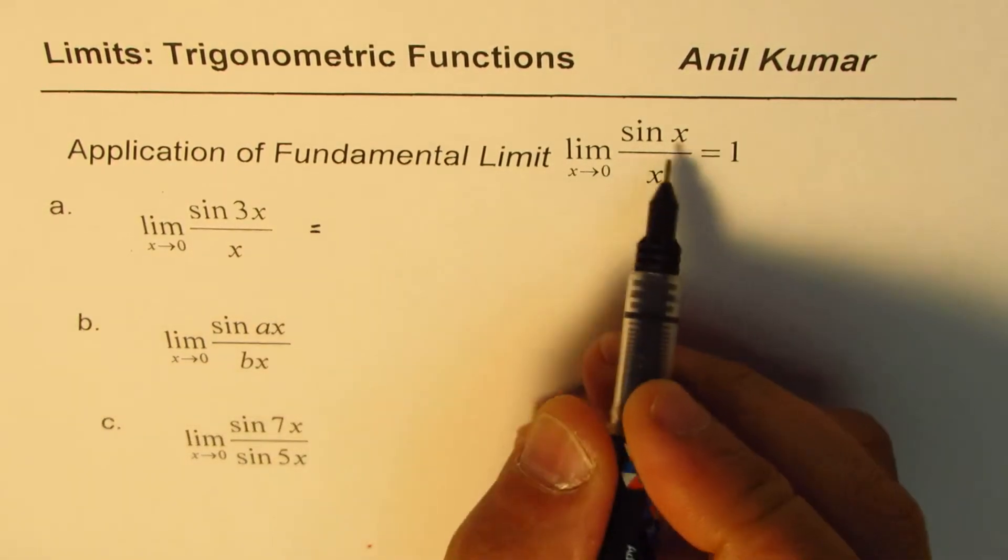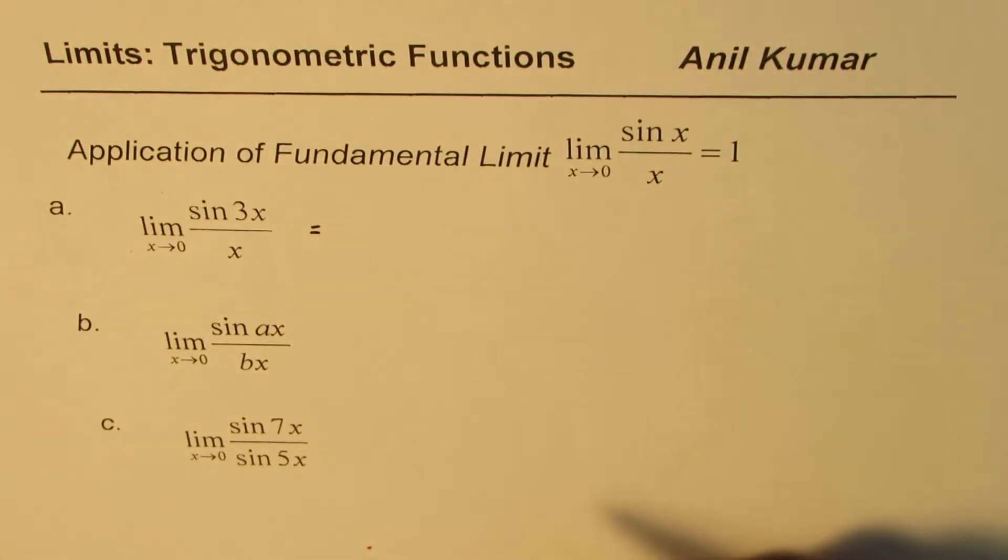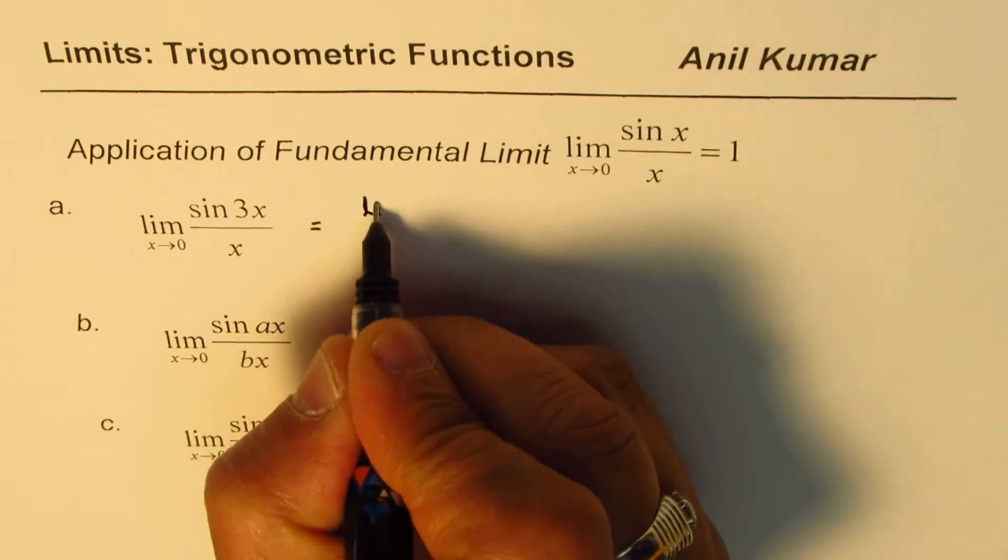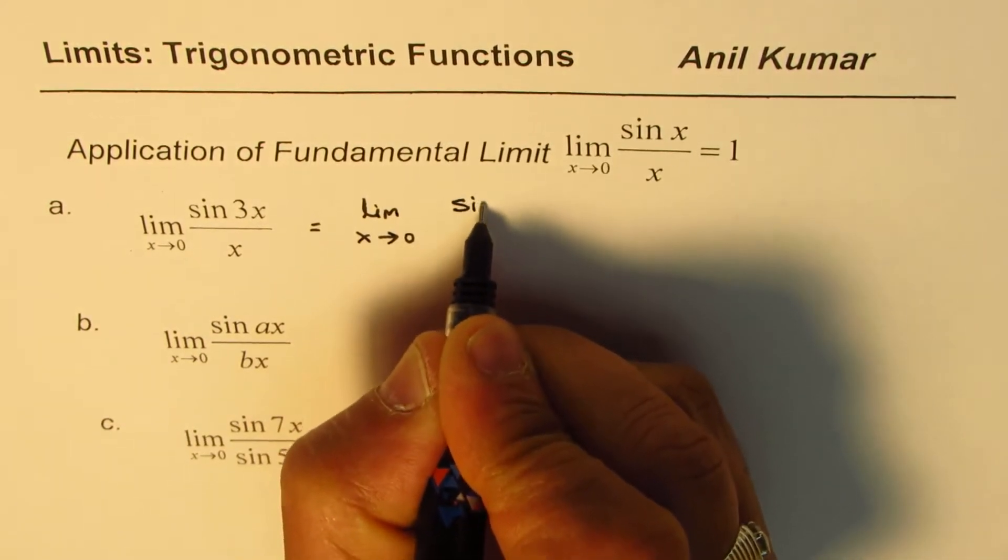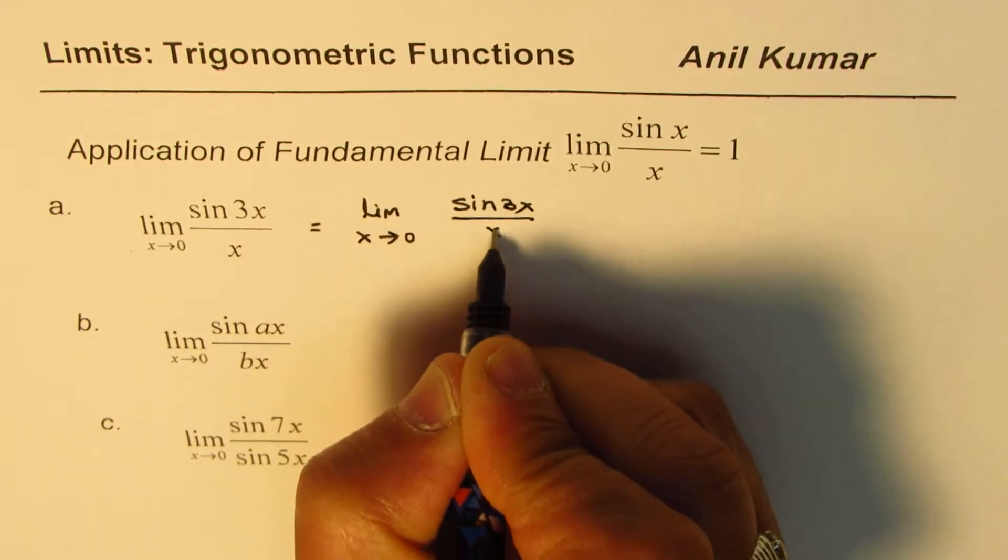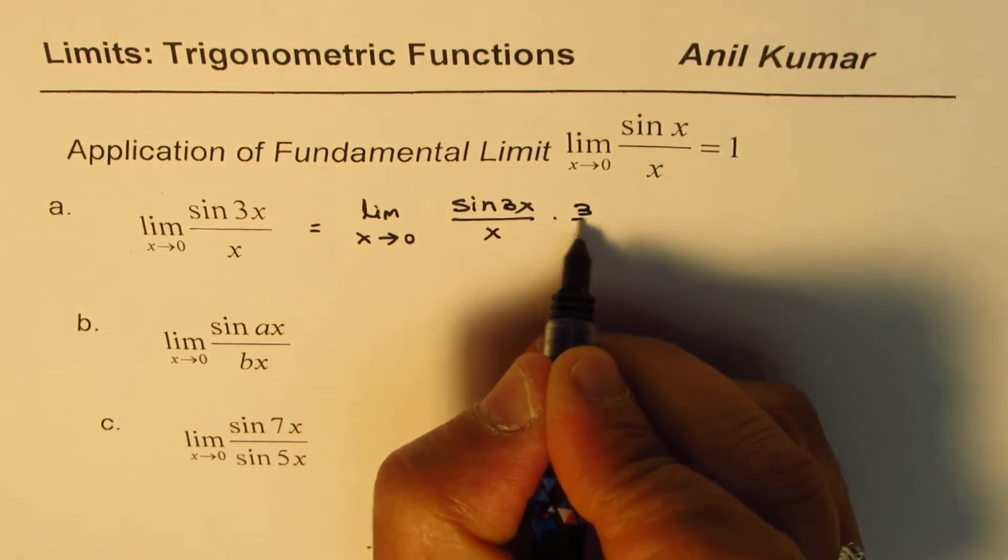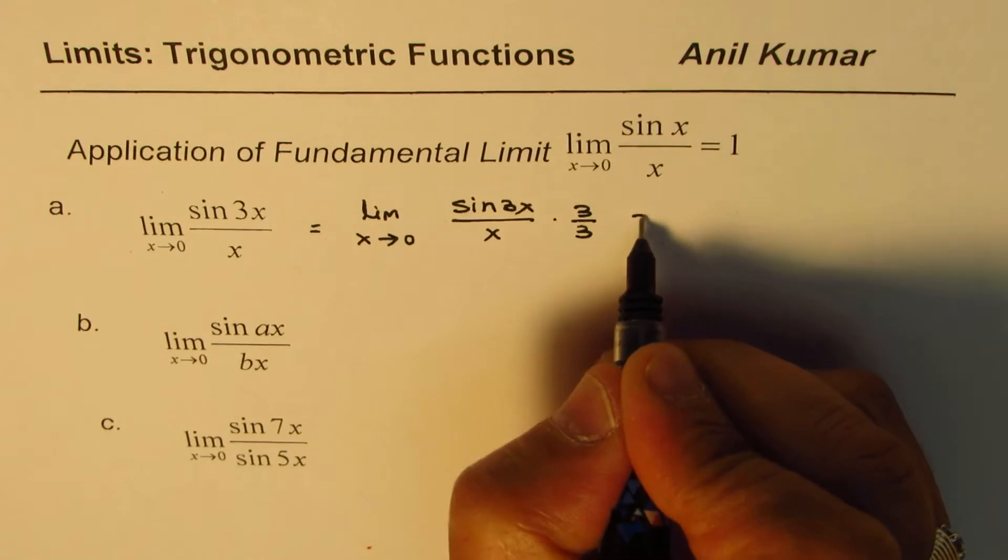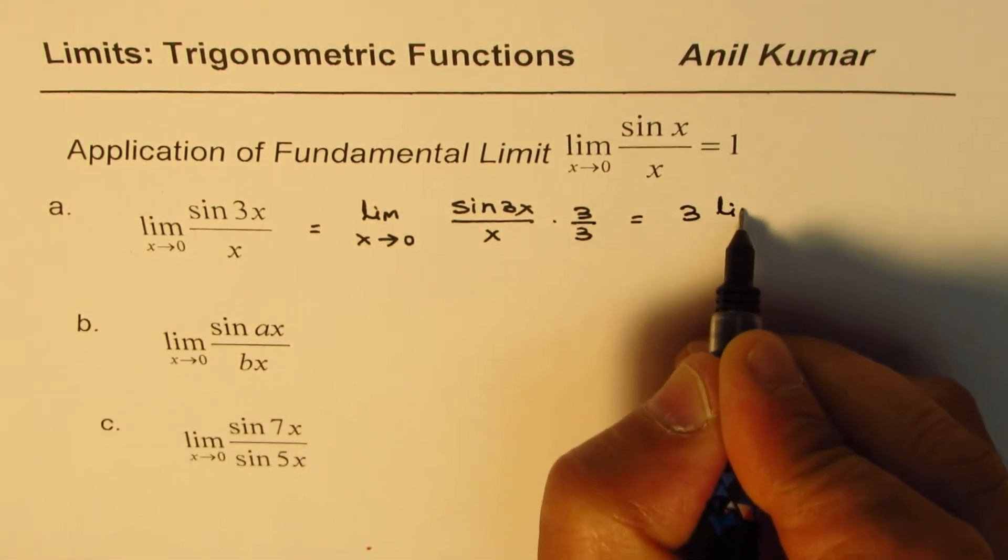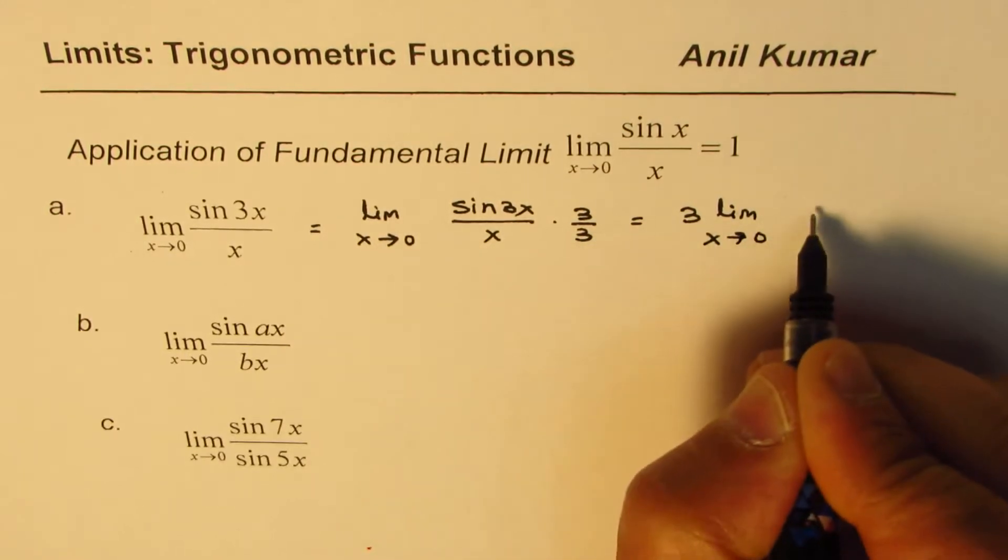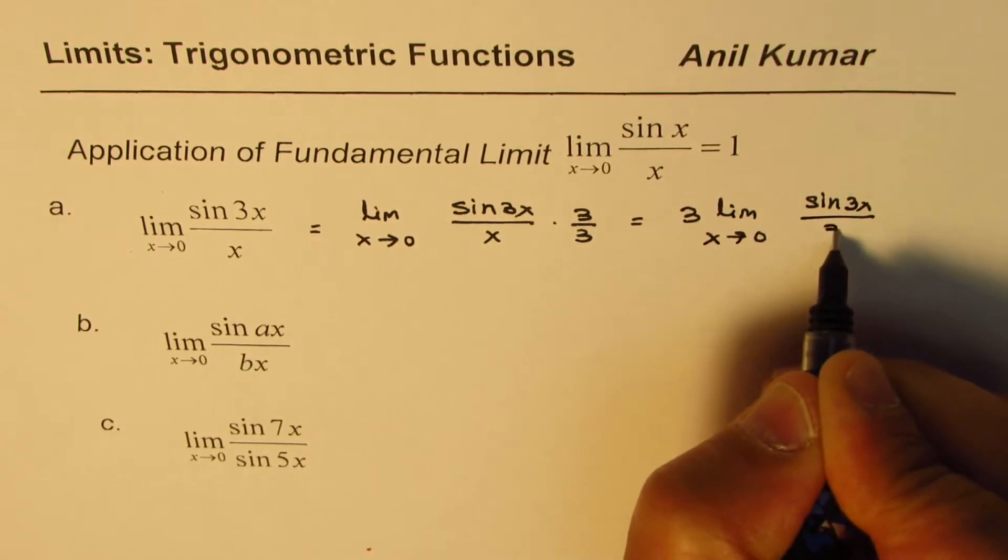So we should get this kind of a form to utilize the fundamental limit of this trigonometric function. Let me rewrite this given limit as limit x approaches 0. We have sin 3x over x. We need 3 in the denominator, so what I will do is multiply and divide by 3. Which could be written as 3 is a constant. Let me write down here. And then we can say limit x approaches 0 of sin 3x over 3x.